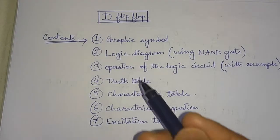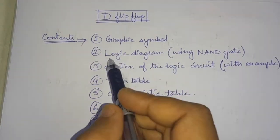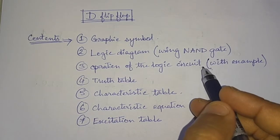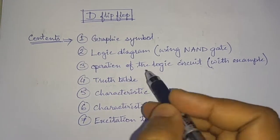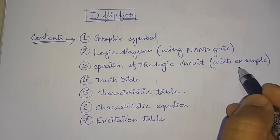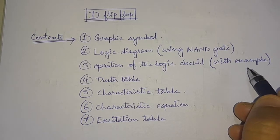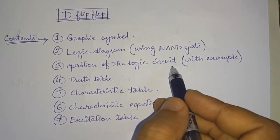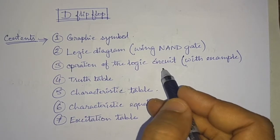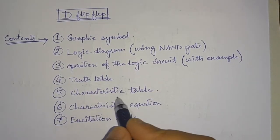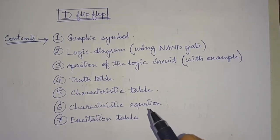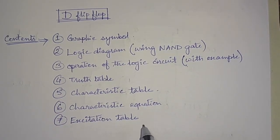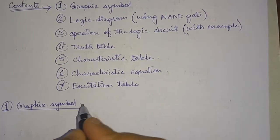These are the points covered in this tutorial: first we will see the graphic symbol, then we will see the logic diagram using NAND gates — we can use NOR gates also, but for this presentation I will use a NAND-gate based D flip-flop. Then we will see the operation of the logic circuit with examples, taking zero and one values at the input to find the next state. Then we will see the truth table, the characteristic table, the characteristic equation, and finally the excitation table.